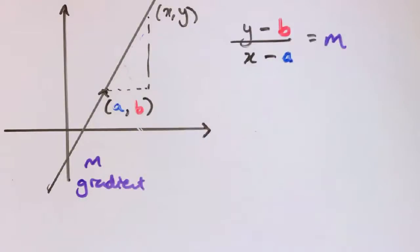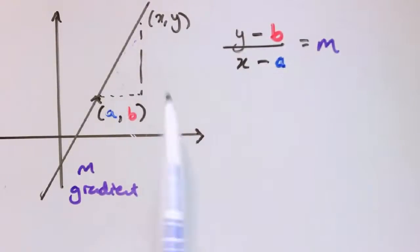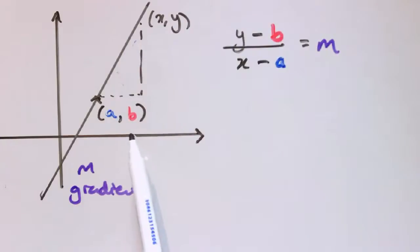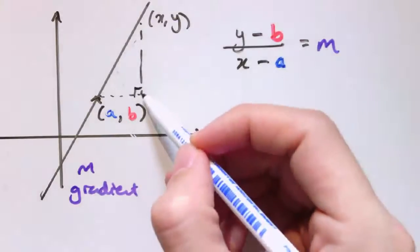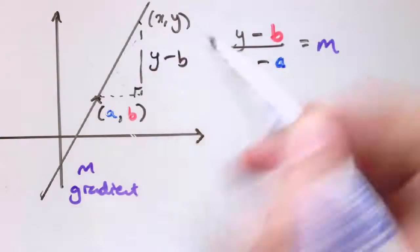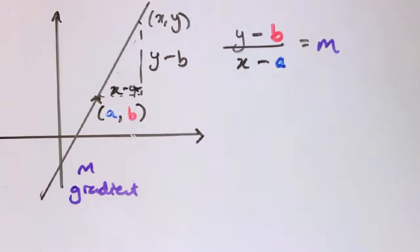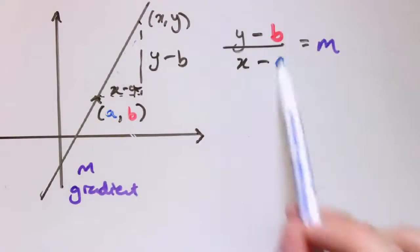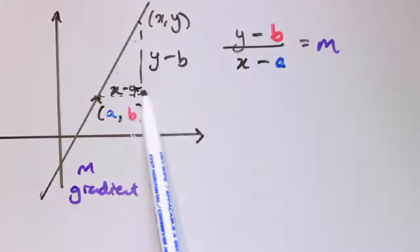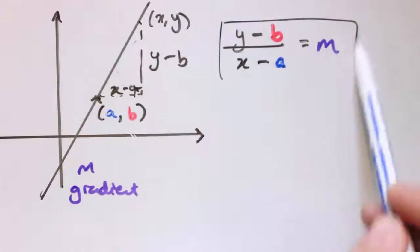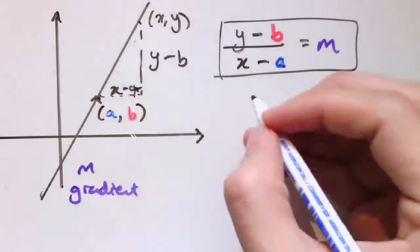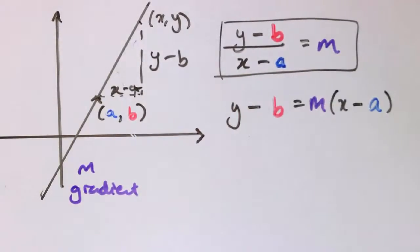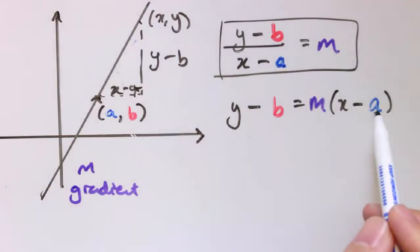This point-slope form might look a bit complicated at first, but it's easy once you get used to it. In general, if I know the line goes through a particular point (a, b) and have a general point (x, y) with gradient m, then the vertical distance is y minus b and the horizontal distance is x minus a. So the general equation is (y minus b) divided by (x minus a) equals m, or equivalently y minus b equals m times (x minus a). You just fill in the known x and y coordinates separately.